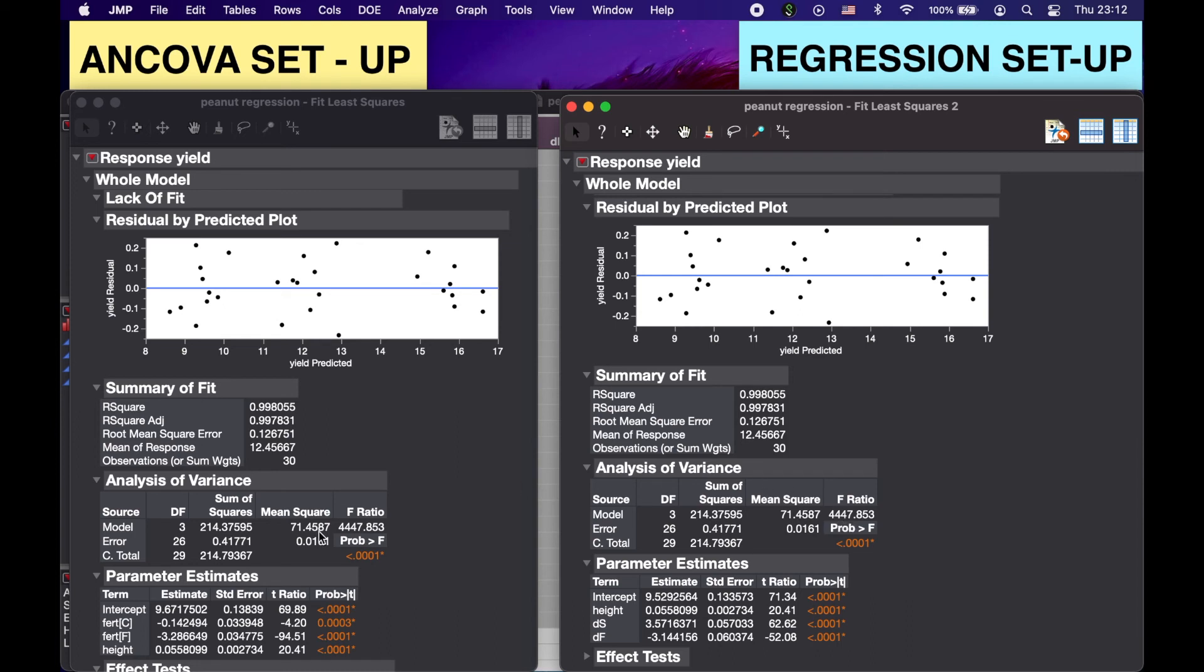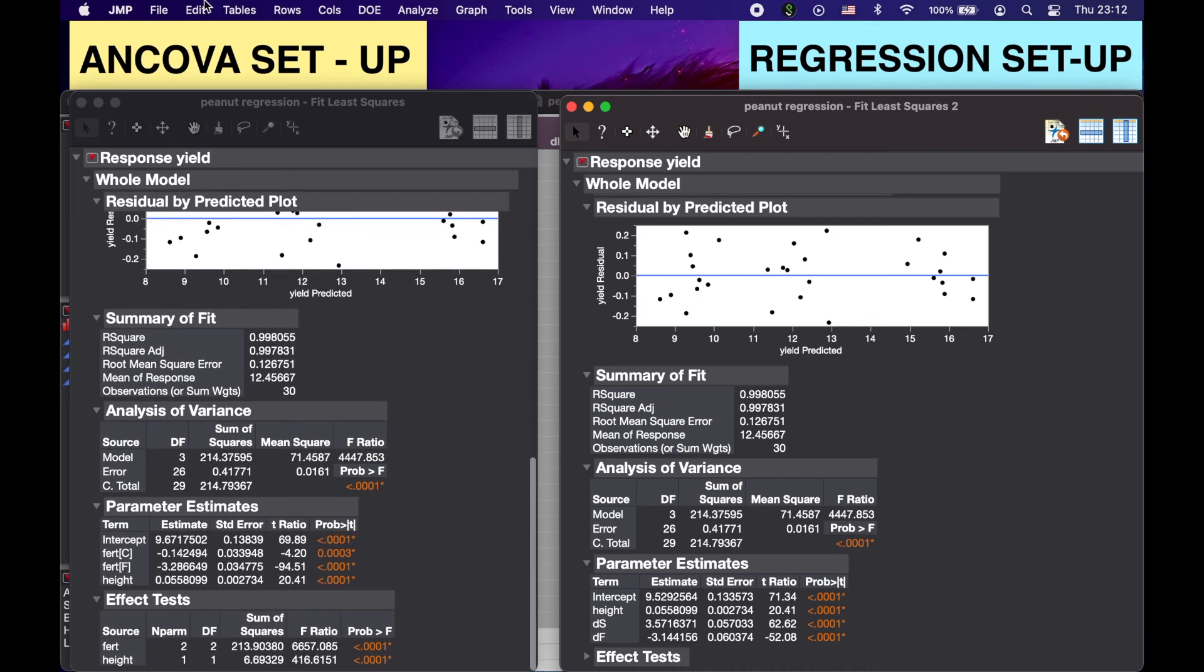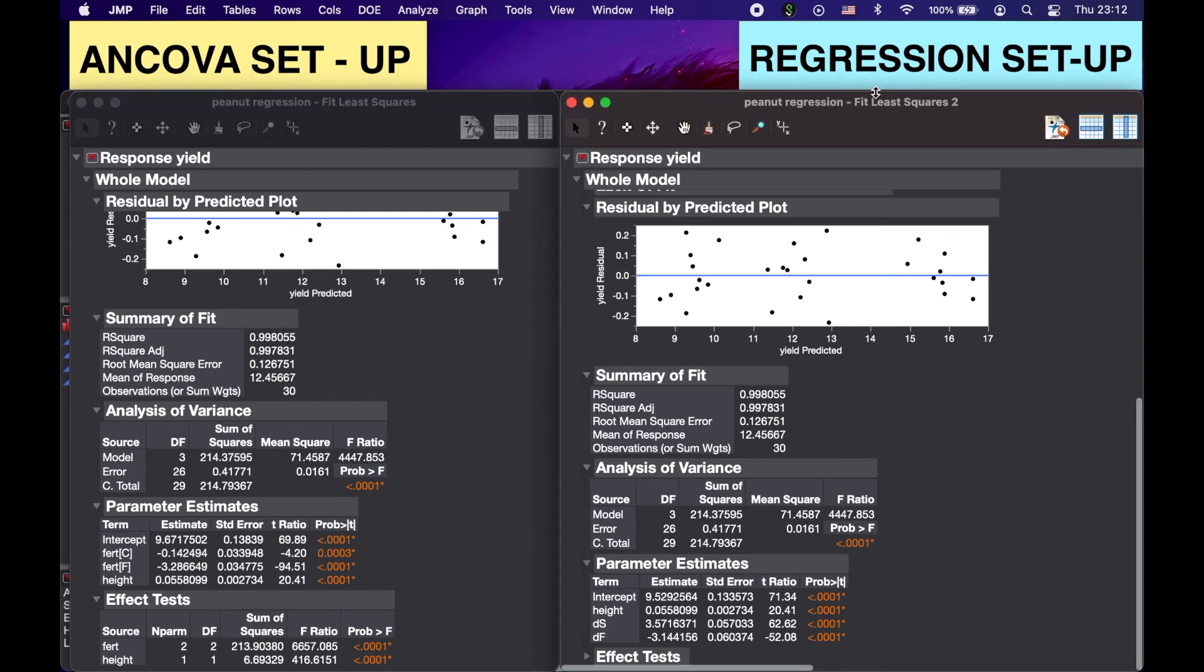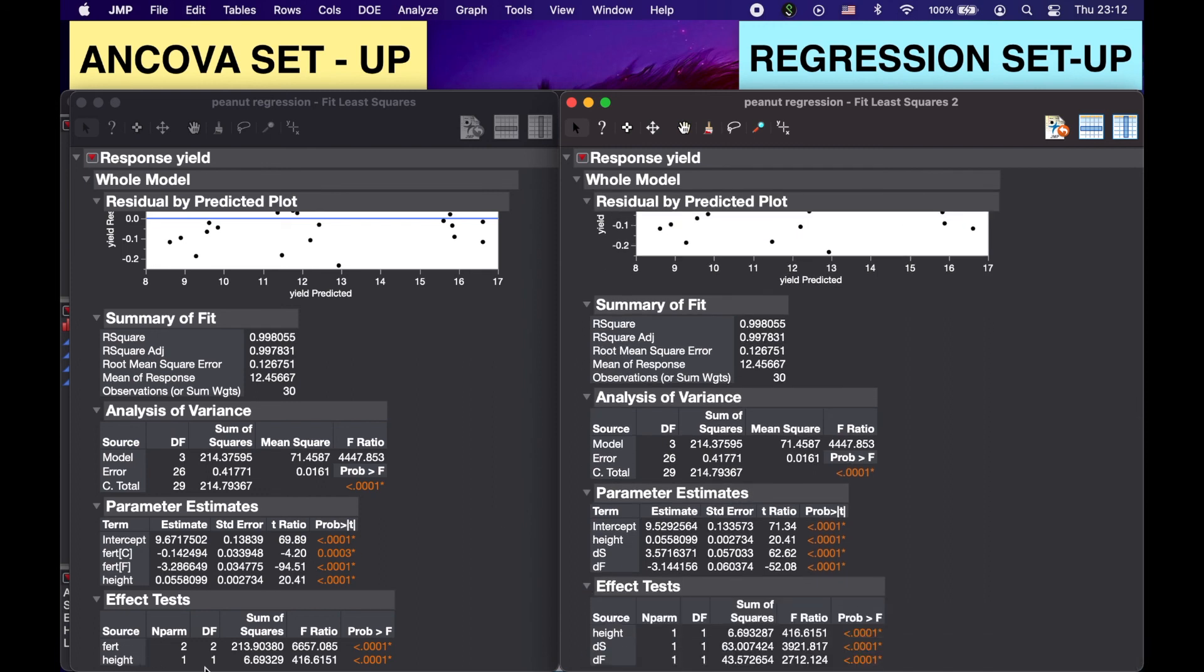We can also see our parameter estimates for the ANCOVA setup also match with our regression setup over here on the right. Then our effects tests for height matches. So we have a 4-1-6 for our f and a 4-1-6. Now the slight difference is that fertilizer here is in one row, but then in our regression setup it's broken up into two. So there's a slight difference, but not too much. But hopefully you guys see that overall these two setups produce the same results and parameter estimates and all that.